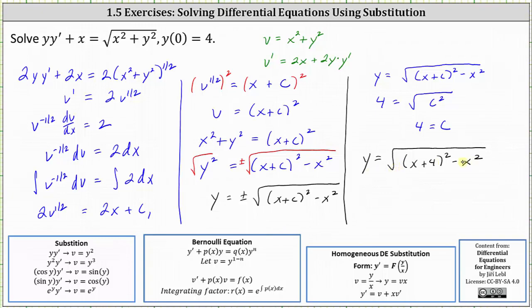Now we should mention we can simplify the radicand if we want. The square of x plus four is x squared plus 8x plus 16, and then we have minus x squared. We can also write the particular solution as y equals the principal square root of just 8x plus 16. So either form should be acceptable.